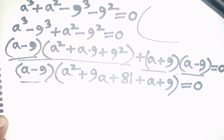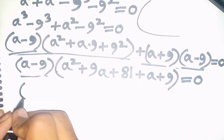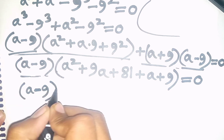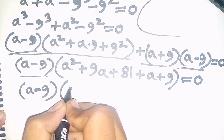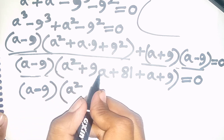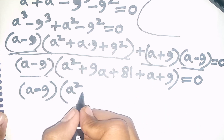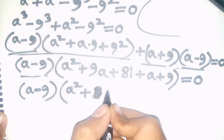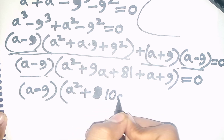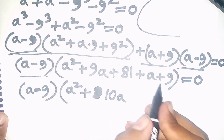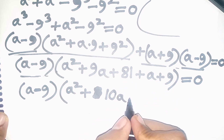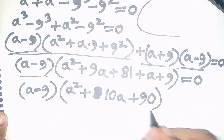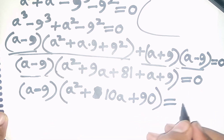Now we can write here: (a - 9) times (a² + 9a + a + 81 + 9), that means plus 10a, and 81 + 9 means plus 90. Then bracket close is equal to 0.